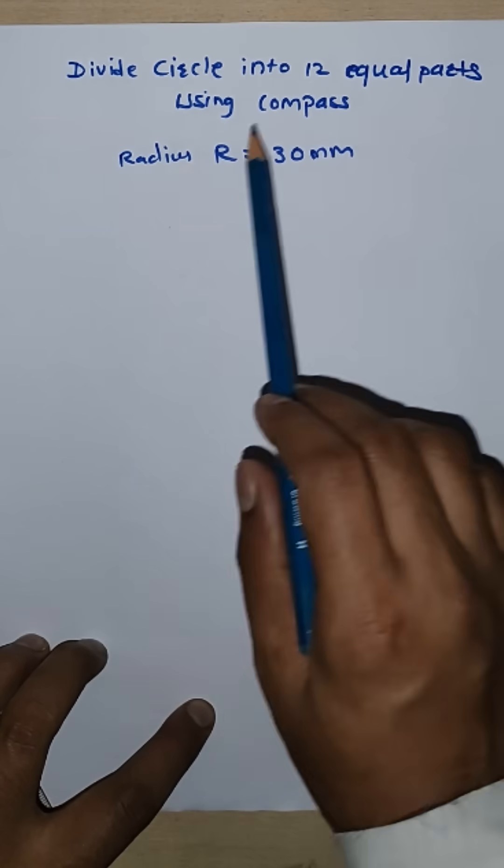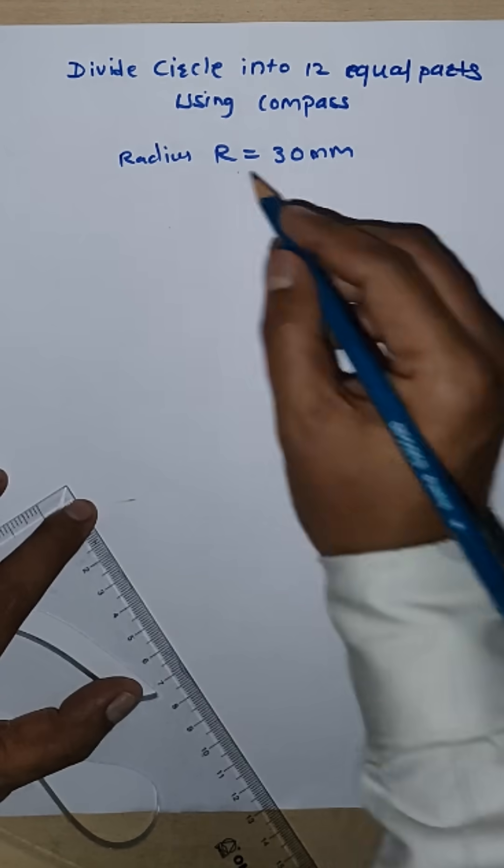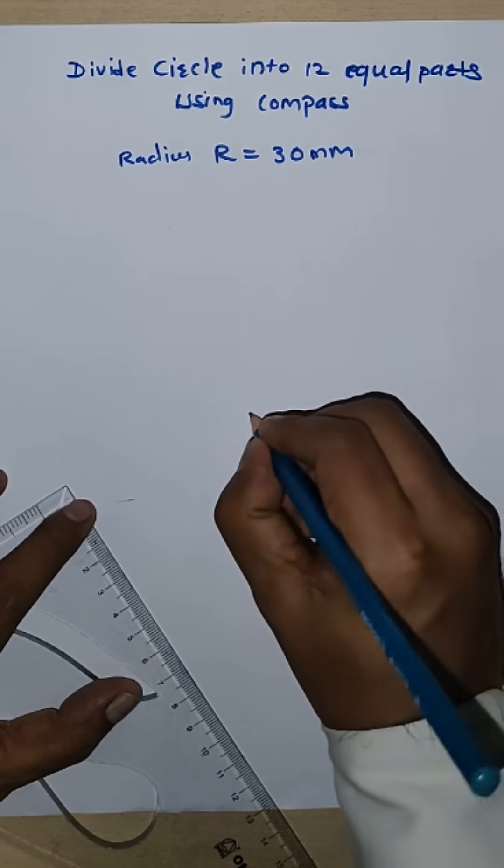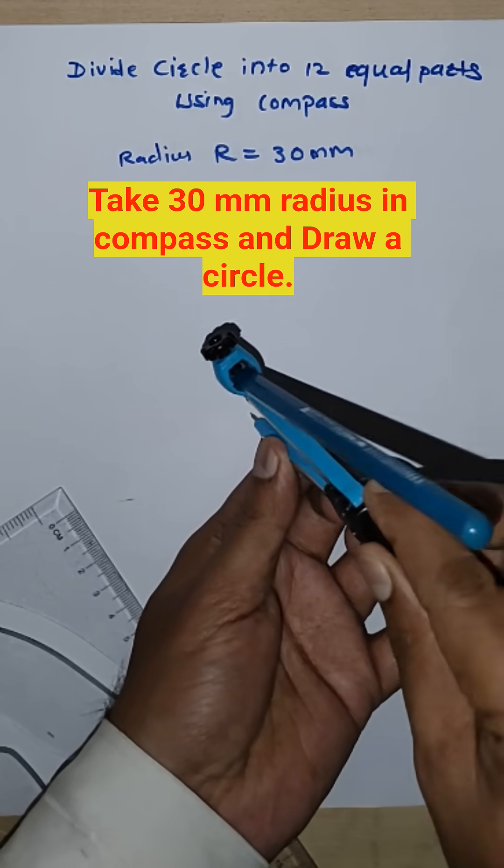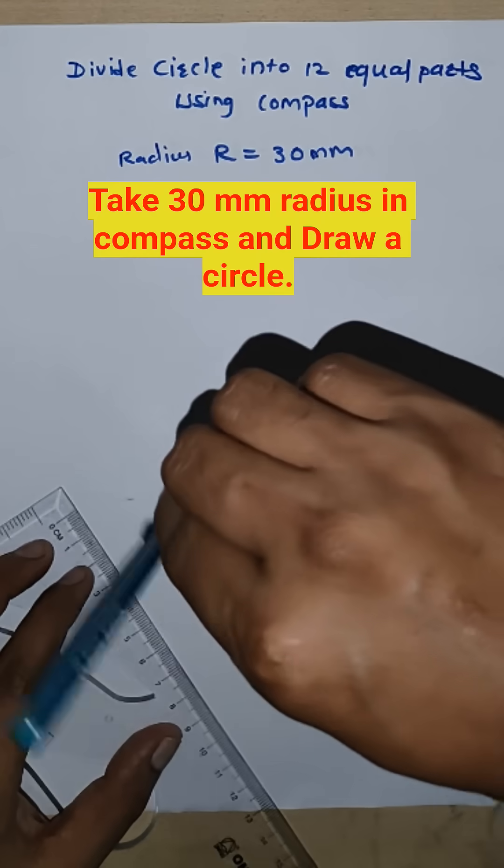Divide circle into 12 equal parts using compass. Radius is 30 mm. Take one point, set 30 mm radius in compass, and draw a circle.